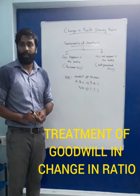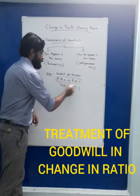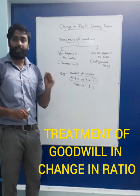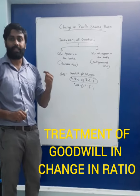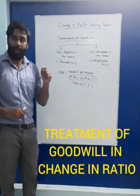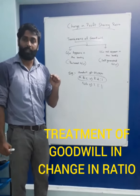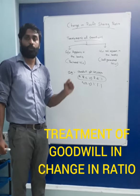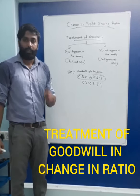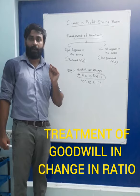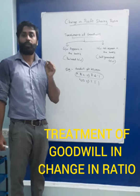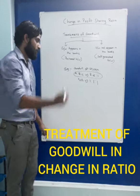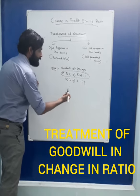This goodwill was purchased by the partners when they were dividing profit in the ratio 3:2:1. In the case of purchased goodwill, when there is a change in profit-sharing ratio, the goodwill appearing in the balance sheet has to be distributed by the partners in the old ratio, that is 3:2:1. So we have to divide that goodwill of 60,000 in the ratio 3:2:1.